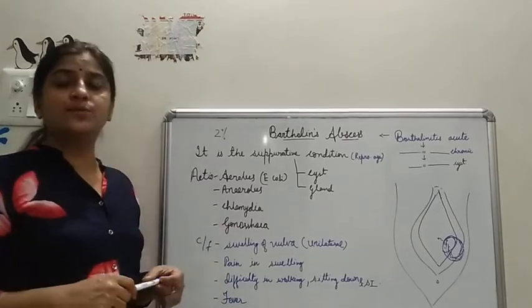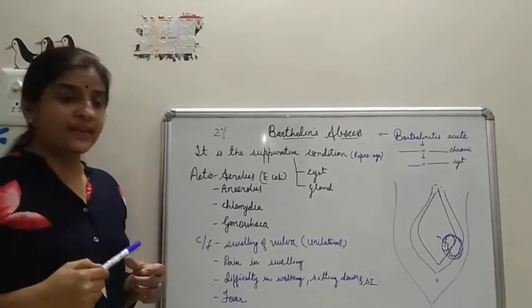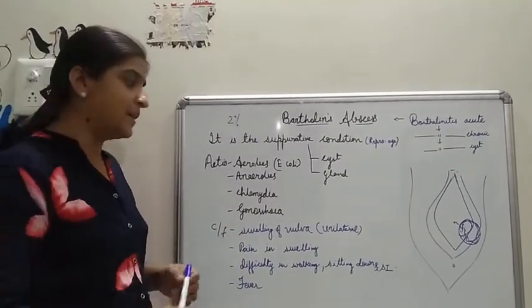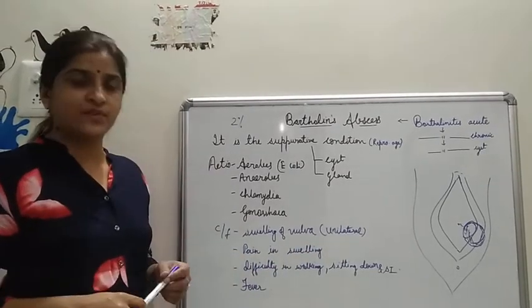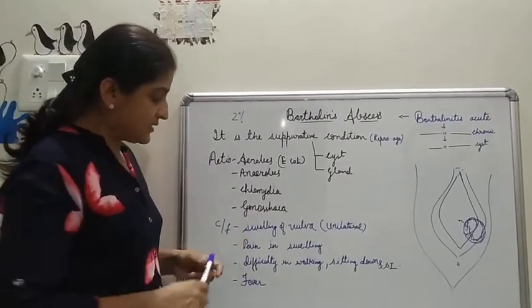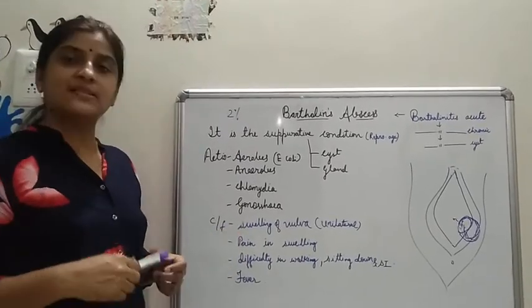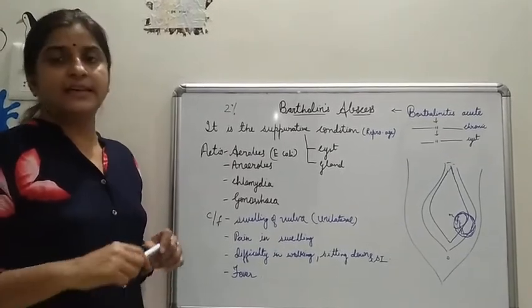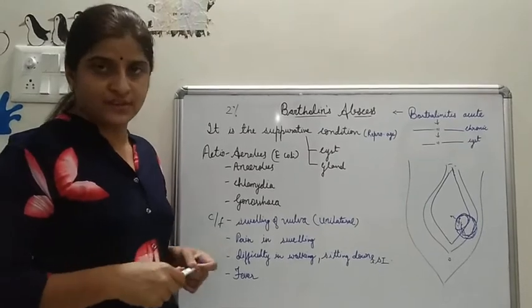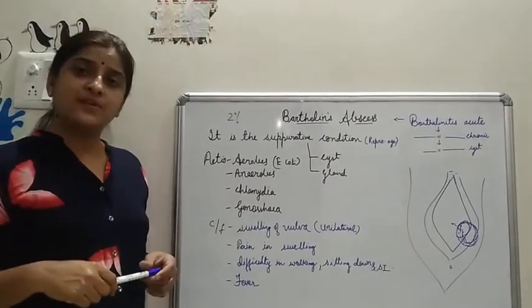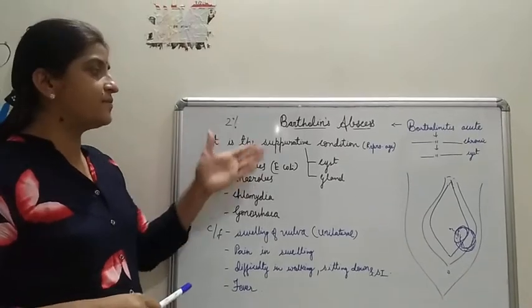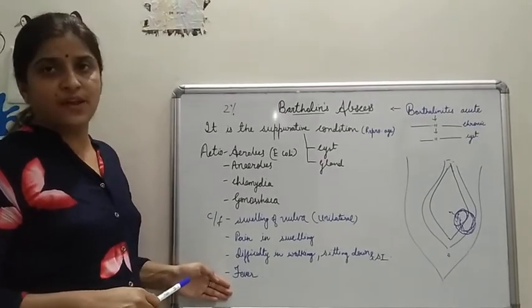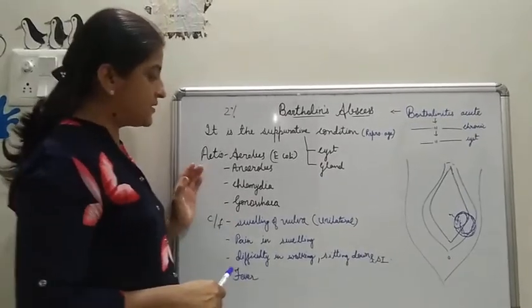How will a woman present? She may come with swelling of the vulva which is usually unilateral. The gland is bilaterally situated but we commonly see the condition on one side. Swelling is a very common symptom. Due to this swelling, if it is larger, she will complain of difficulty in walking, sitting down, and discomfort in sexual intercourse. She may experience pain during swelling, and of course, as it is an infection by anaerobes and aerobes, there is inflammation and fever will always be there.